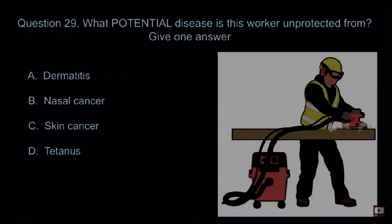Question 29: What potential disease is this worker unprotected from? Give one answer. A: Dermatitis. B: Nasal cancer. C: Skin cancer. D: Tetanus. The correct answer is B: Nasal cancer.